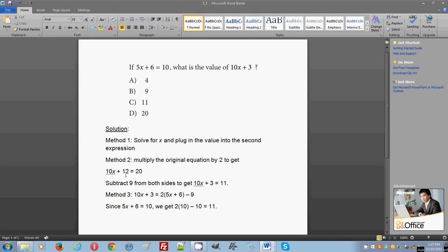Now you see 10x plus 12 is very similar to 10x plus 3, because the only thing that's different is there's a 12 here and a 3 here. So what do we do? To get 12 to equal 3, we subtract 9 from 12. We subtract 9 from both sides and we get 10x plus 3 on the left side and 11 on the right, because 20 minus 9 is 11. This is a shortcut you can use.